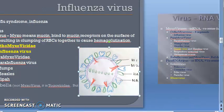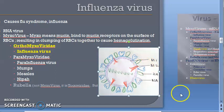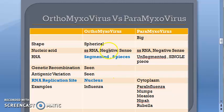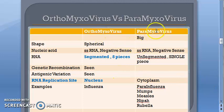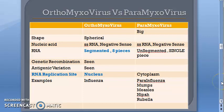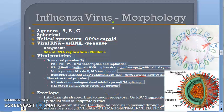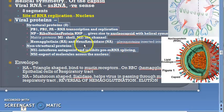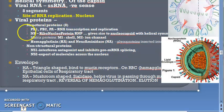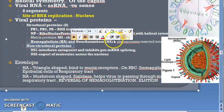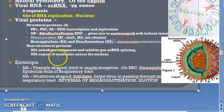Influenza virus is an RNA virus — it is an orthomyxovirus with eight segments of single-stranded RNA. We covered the differences between orthomyxoviruses and paramyxoviruses. There are structural and non-structural proteins. The eight structural proteins are: PB1, PB2, PA, NP (ribonucleoprotein), matrix proteins M1 and M2, hemagglutinin (HA), and neuraminidase (NA).